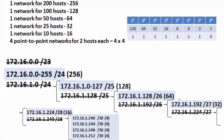In the end, we've created nine subnets of different sizes: a 256, a 128, a 64, a 32, a 16, and four four-host subnets. This is VLSM — Variable Length Subnet Masks — and it allows us to create subnets or networks specific to the network's requirements.